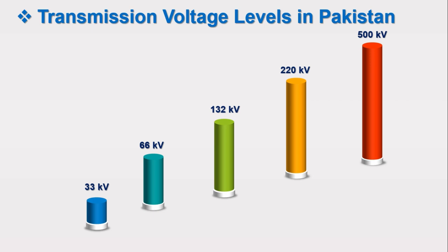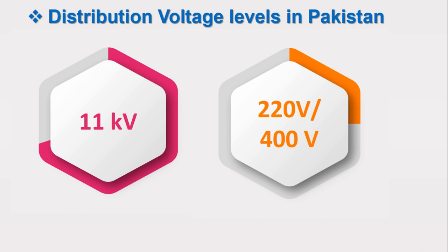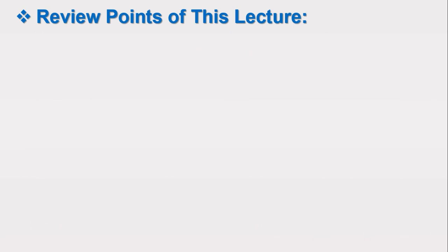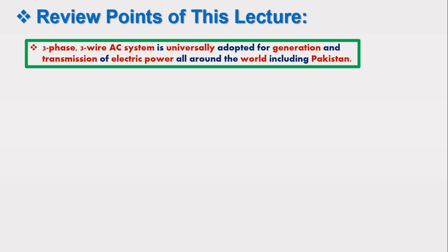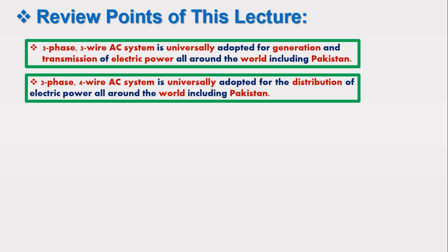The distribution voltage levels in Pakistan are 11 kV and 220/400 volt. In review: three-phase, three-wire AC system is universally adapted for generation and transmission of electric power worldwide including Pakistan, and three-phase, four-wire AC system is universally adapted for the distribution of electric power worldwide including Pakistan.